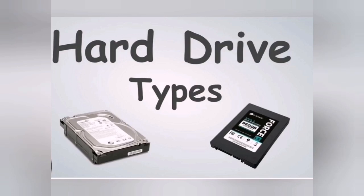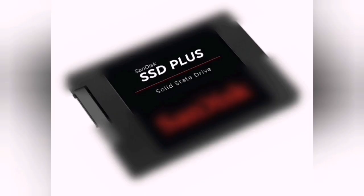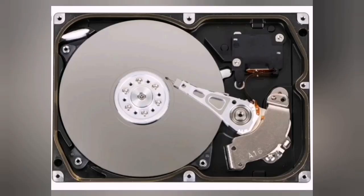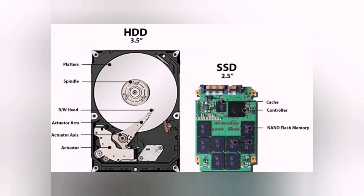There are two main types of hard drives: the solid state drive, or SSD, and the hard disk drive, or HDD. The main difference is that SSDs use electronic chips to store data, while HDDs use magnetic sectors with a reading head to read and store data.